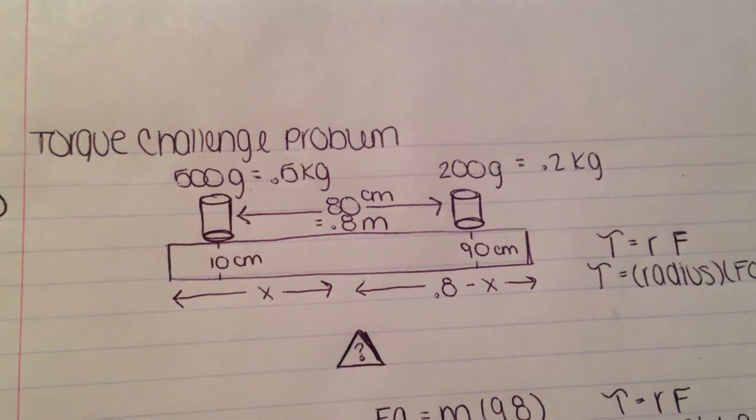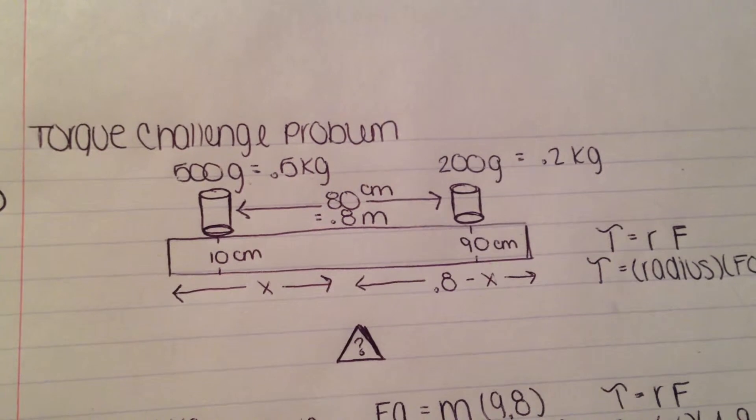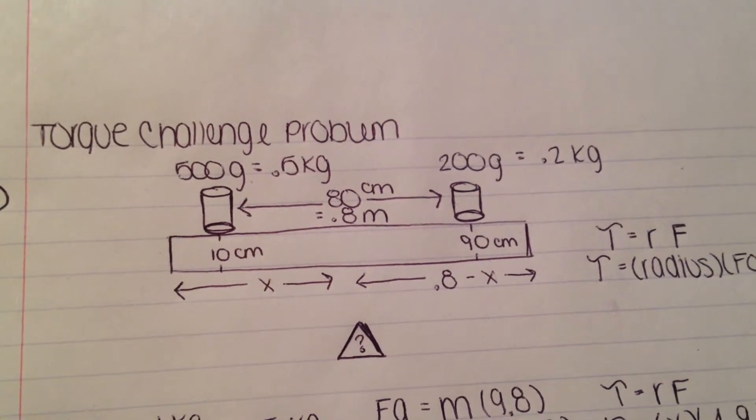You use 0.8 meters because we can't work in centimeters. Now that you have the substitutes for the radius, we can start working our way to the torque formulas.